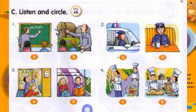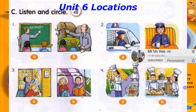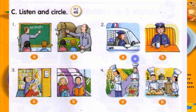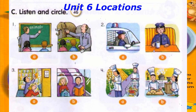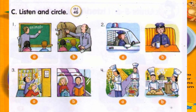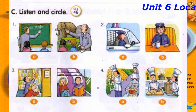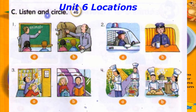Track 46. C. Listen and circle. Number 1: Is the teacher at the zoo? Yes, he is. Number 2: Is the police officer in the car? No, she isn't. She's in the restaurant. Number 3: Are the students on the train? No, they aren't. They're in the library. Number 4: Are the cooks in the store? Yes, they are.